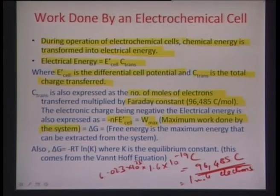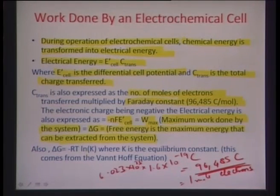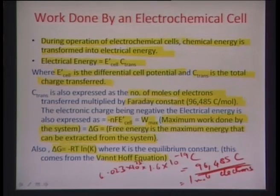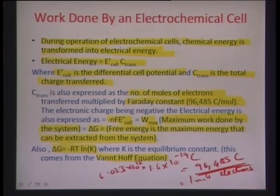From thermodynamics, the Gibbs free energy concept gives the maximum energy that can be extracted from a system, which equals the maximum work done. So ΔG = −nFE′_cell, and can also be represented as −RT ln K, where K is the equilibrium constant — this expression comes from the Van't Hoff equation.